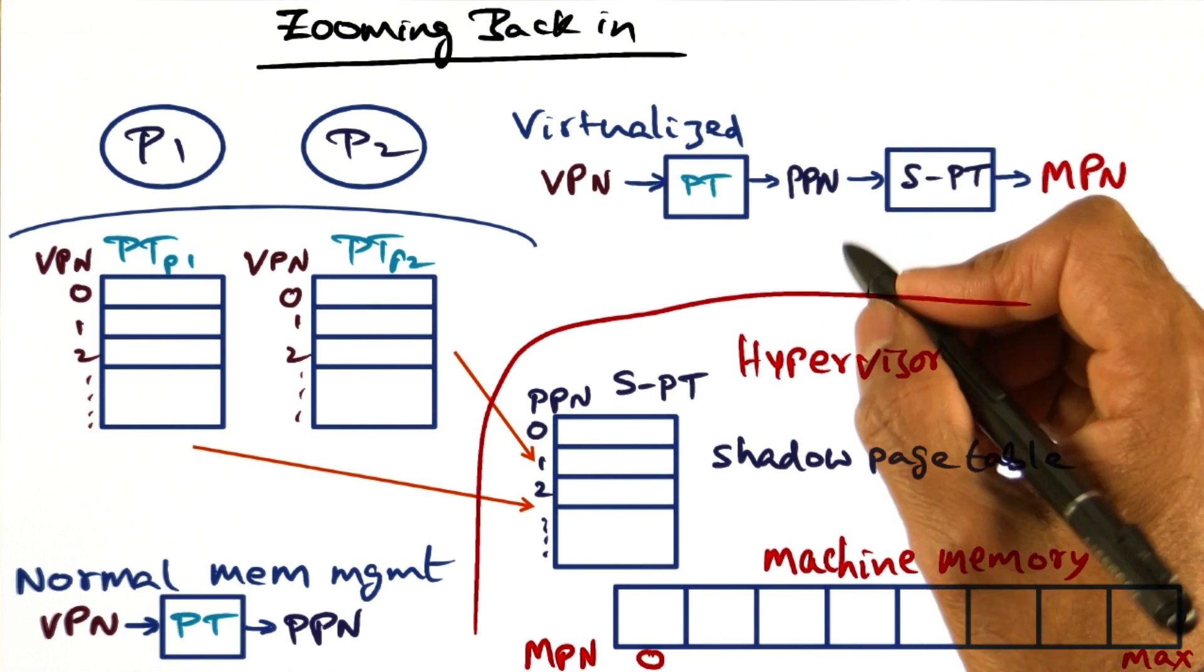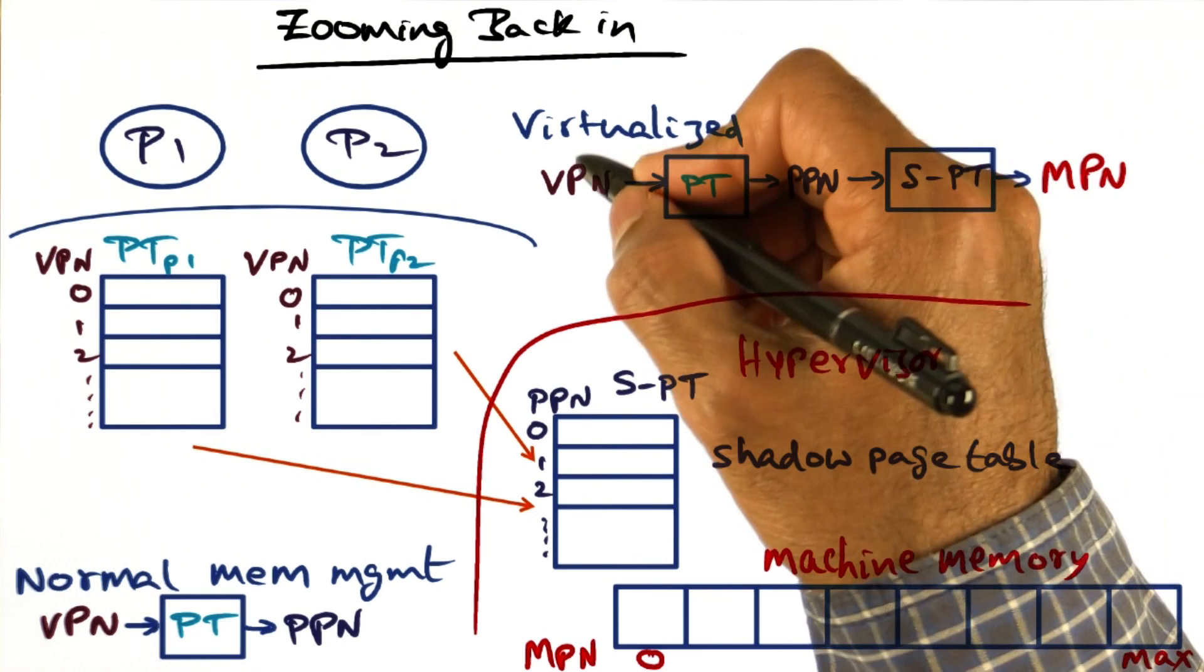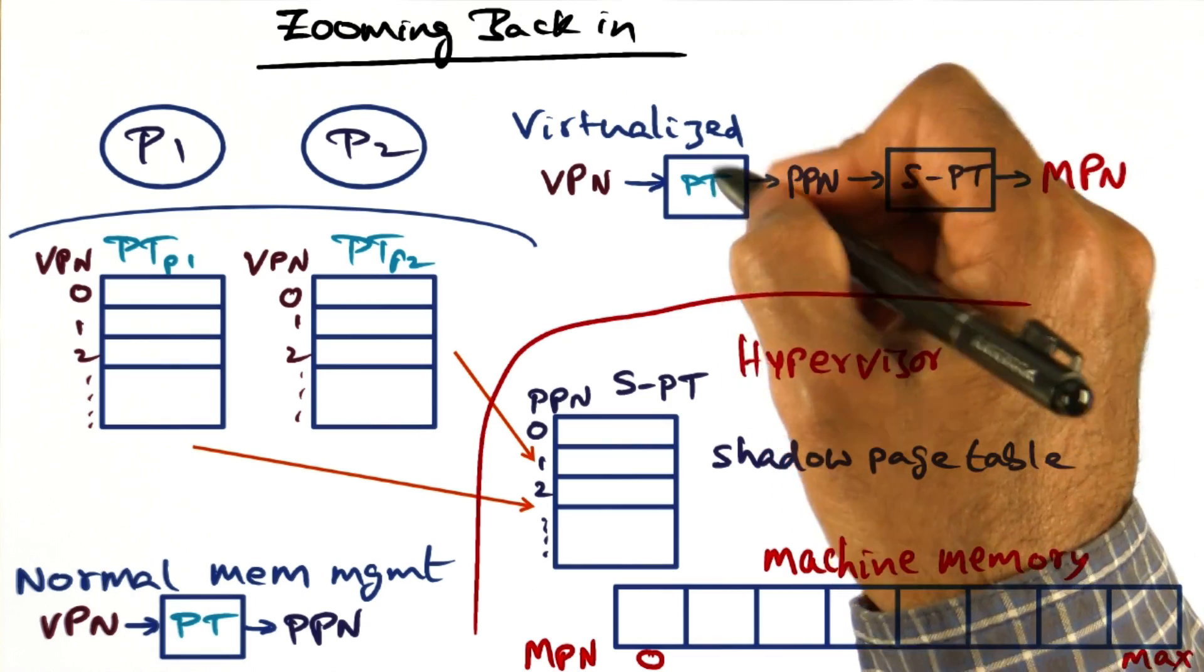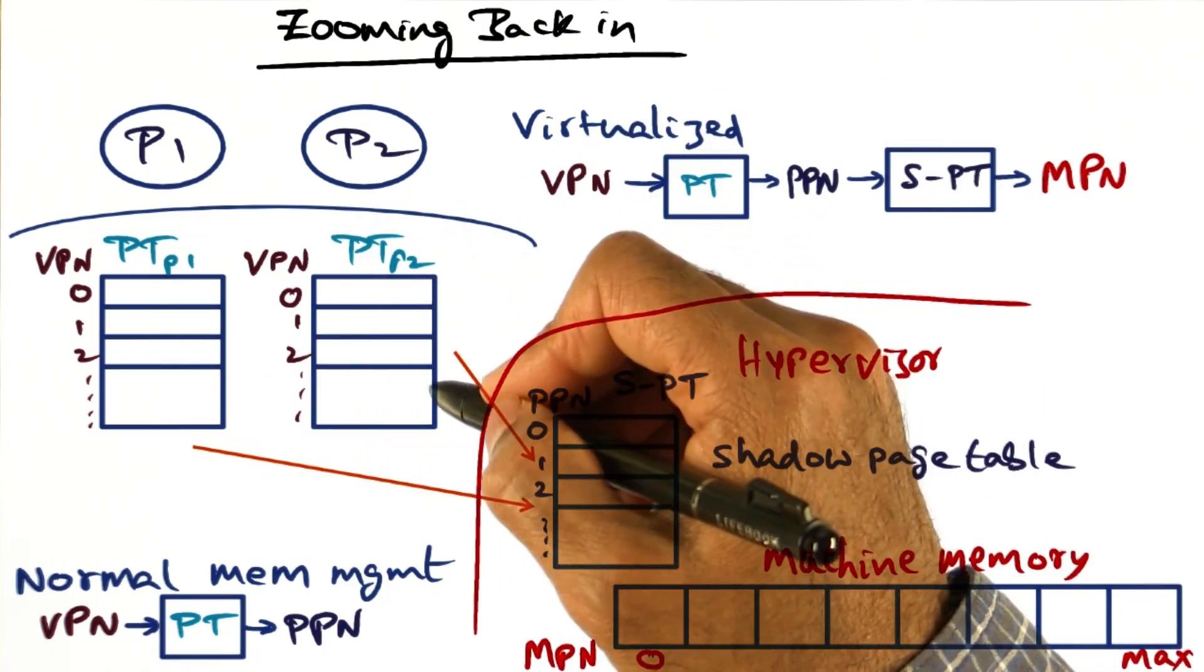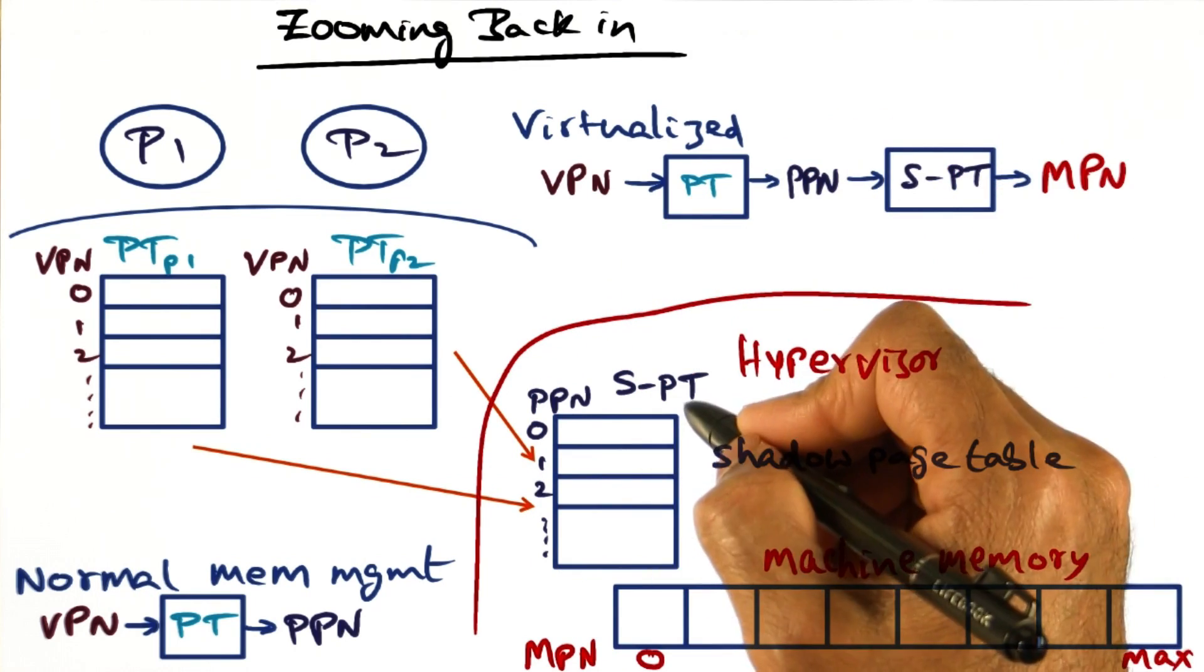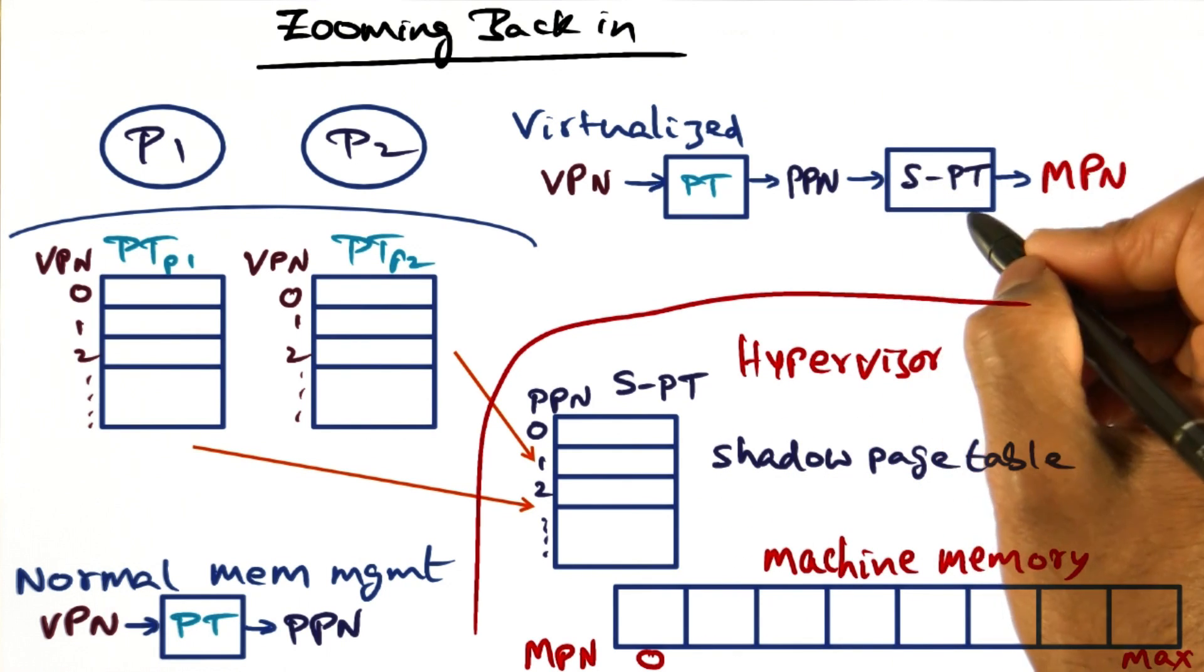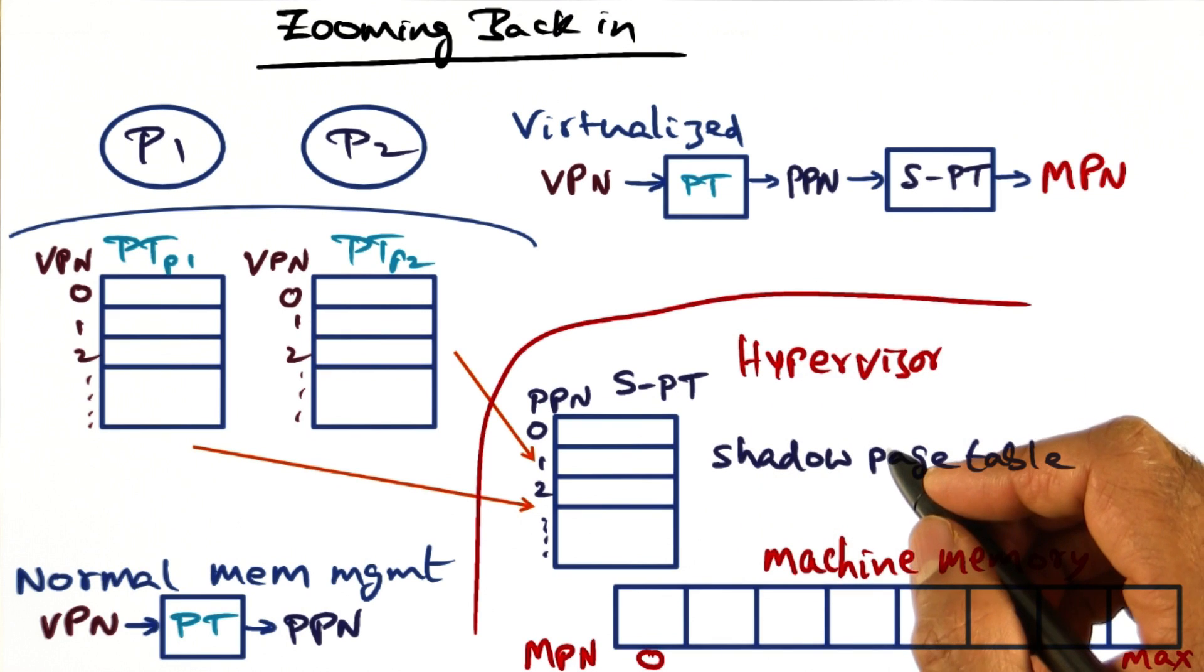Now, in a virtualized setting, there's a two-step translation process to go from VPN to MPN. The page table, maintained by the guest operating system, is the one that translates VPN to PPN. And then there is this additional page table, called the shadow page table, that converts the PPN to MPN. That brings up an interesting question.